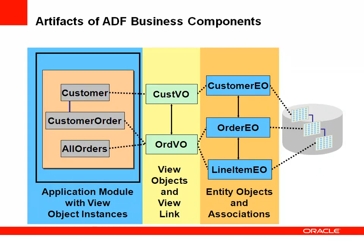Let's look at the architecture of ADF Business Components. There's a separation into three layers. The first layer is comprised of entity objects. An entity object represents a table in your database, mapping to that table and allowing you to execute insert, update, and delete operations against it. Entity objects are related to one another using associations.